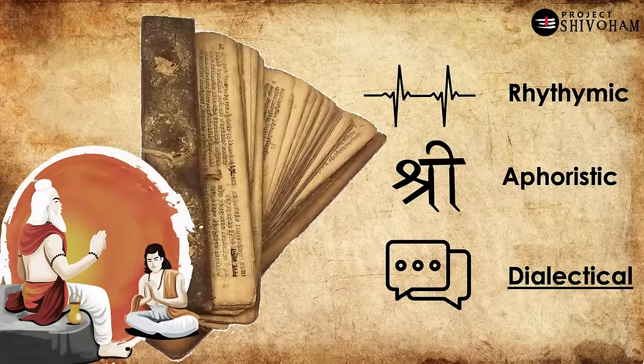If you take a deeper look into the knowledge systems that we have in the forms of Vedas, Puranas, Upanishads, Agama Shastras, Siddhantas, and so on, there are three very important standards that are incorporated in the structuration, articulation, and propagation of these knowledge systems.